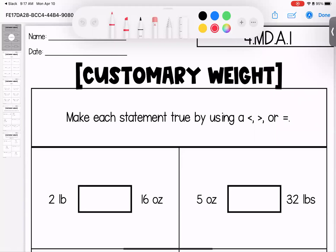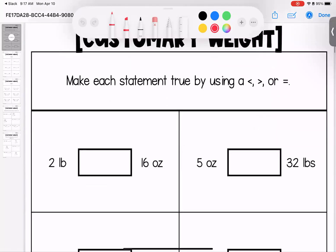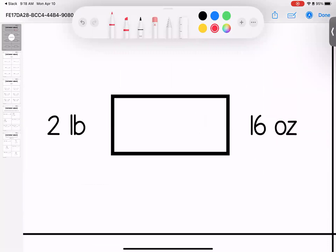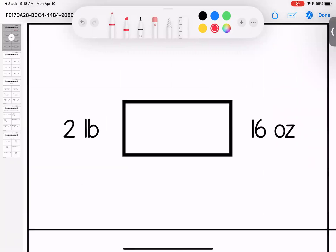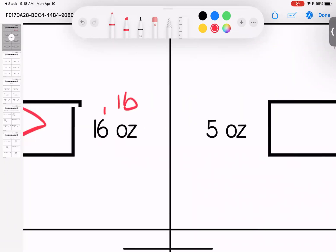Hey kiddos, welcome to this week's homework where we are looking at customary weight or the way that we weigh things here in the U.S. We are comparing a couple of different items starting with these boxes where we're going to use our greater than, less than, or equal to sign. So right here I have two pounds or 16 ounces. There's 16 ounces in one pound, which means that two pounds is the greater amount.